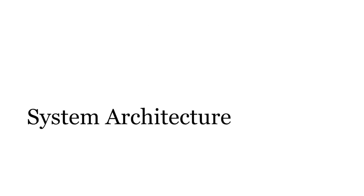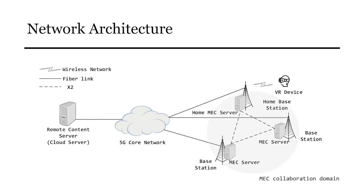Based on the above analysis, we proposed a cooperative transmission network architecture and a reliable transmission process. The network architecture consists of three parts: a remote content server, a 5G core network, and a MEC cooperation domain. The base station directly connected to the VR device is called the Home MEC station and the MEC server deployed near the home base station is called the Home MEC server.